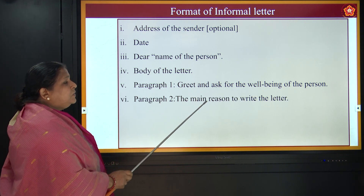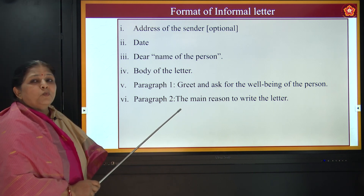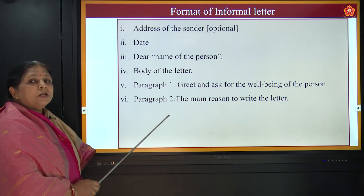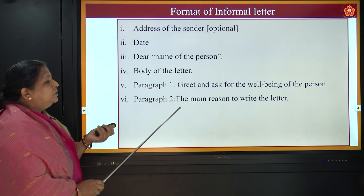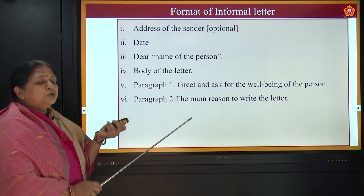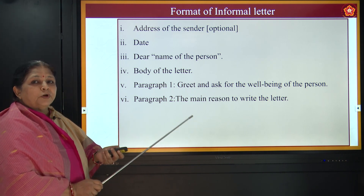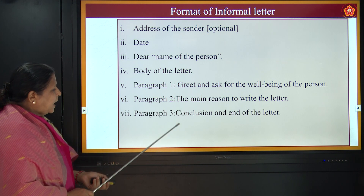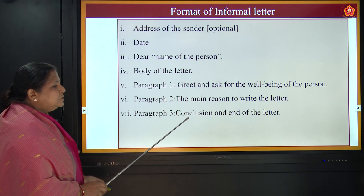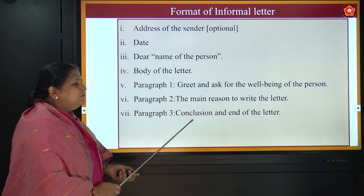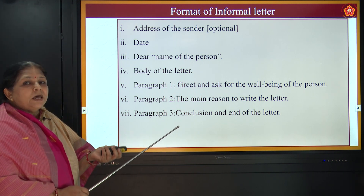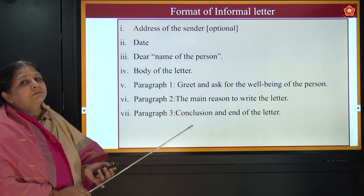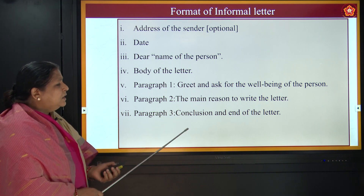Second paragraph — the main reason to write the letter. For example, you have won the state award in your school for Kabadi, and you want to tell your parents and your friend. So you write: 'I have won the state award for Kabadi from my school and I am very happy and I want to inform you about that.' And then the third paragraph — conclusion and end of the letter: 'This gives me a lot of happiness to share this news with you and I am feeling that your presence and blessings are always required.'